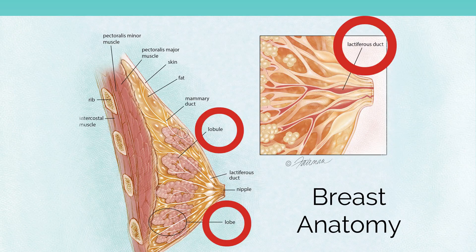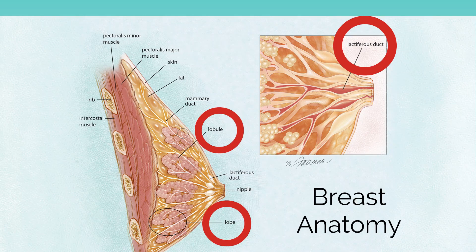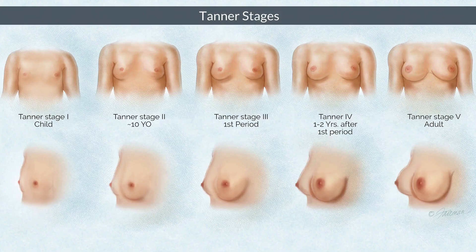Breast architecture is a dynamic process that has been evolving since puberty. Each breast is composed of 15 to 25 lobes. Each lobe contains multiple lobules, which are each made up of alveoli. The alveoli have secretory epithelium and are responsible for milk production. The alveoli form ducts that coalesce into a single duct from each lobe. These lactiferous ducts open into the nipple, and their pinpoint openings can be seen in lactation. From birth through puberty, breast development occurs in the volume and differentiation of the structures of the mammary glands.